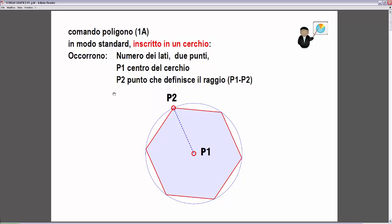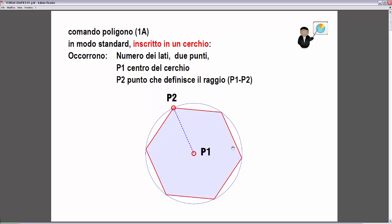Nell'inserire il secondo punto andremo a definire questo poligono regolare con un vertice che coincide con P2. Quindi viene ruotato questo poligono con un vertice coincidente con il secondo punto. Per questo tipo di costruzione — cioè con il poligono iscritto in un cerchio — c'è anche un'altra possibilità, una variante. Andiamo a vedere con la successiva slide.